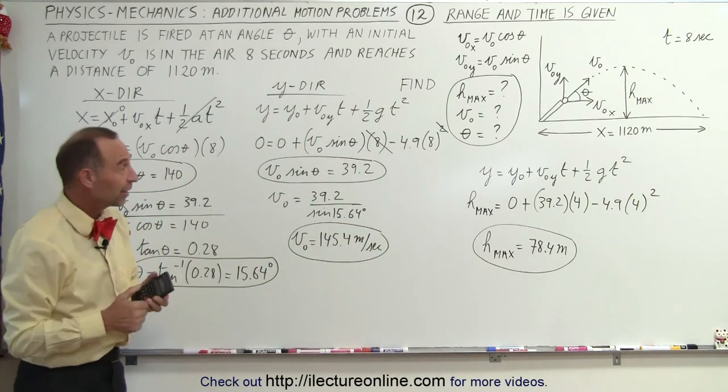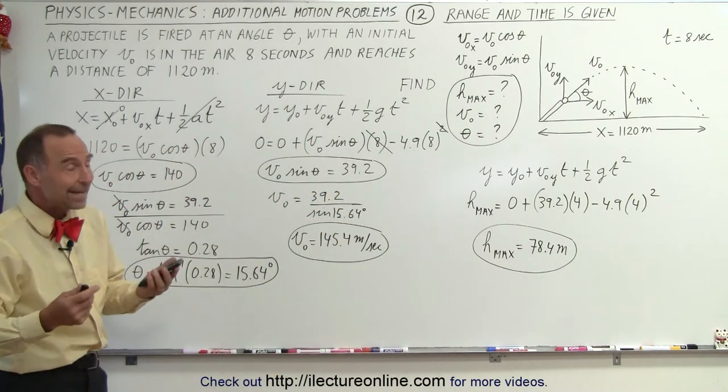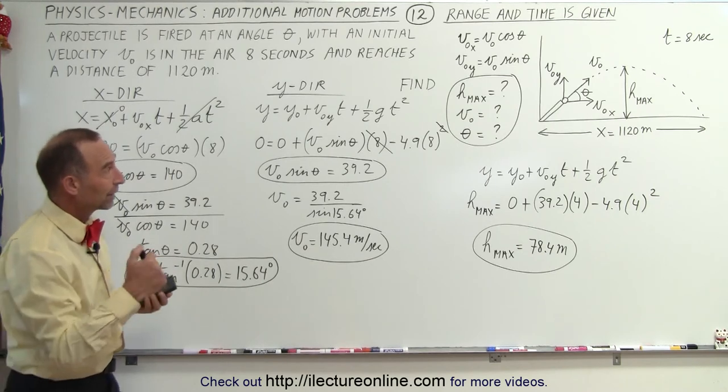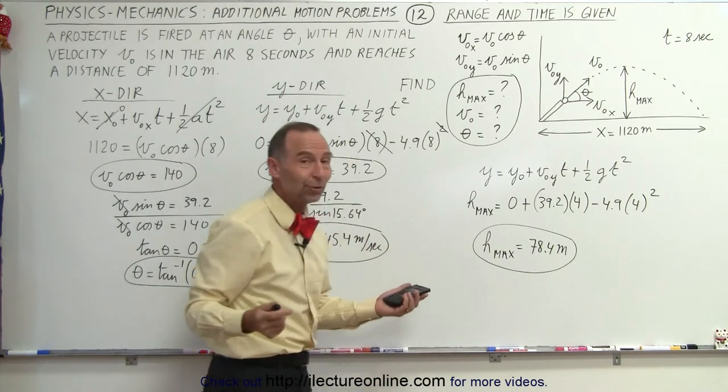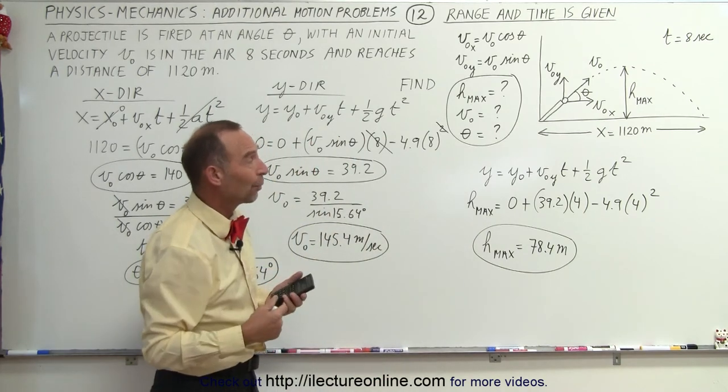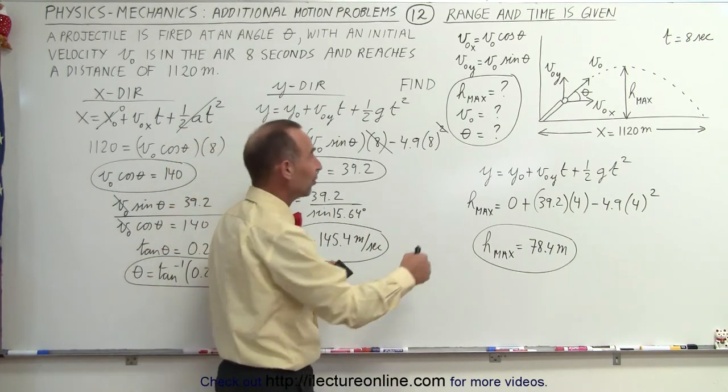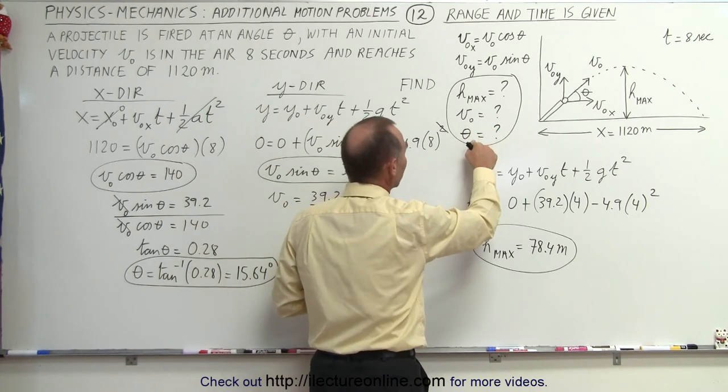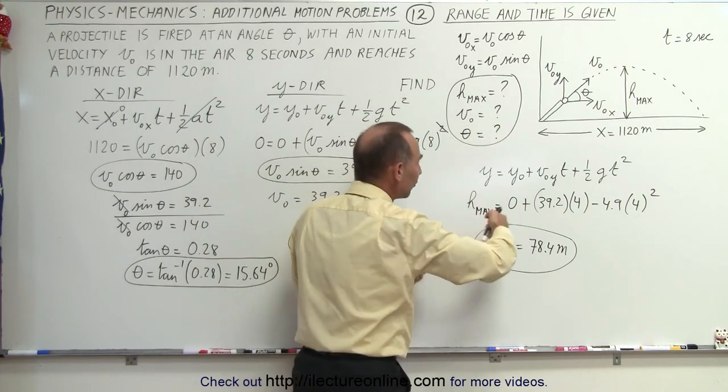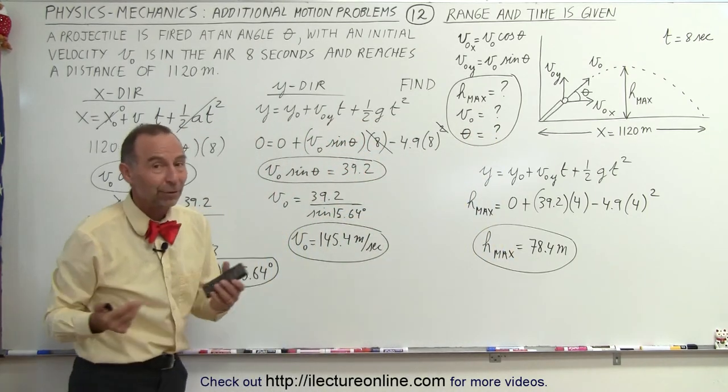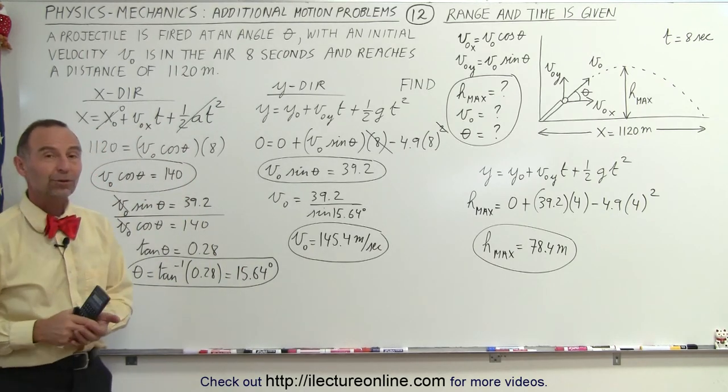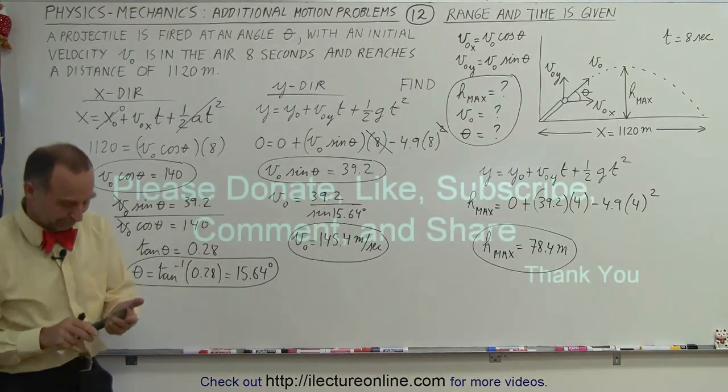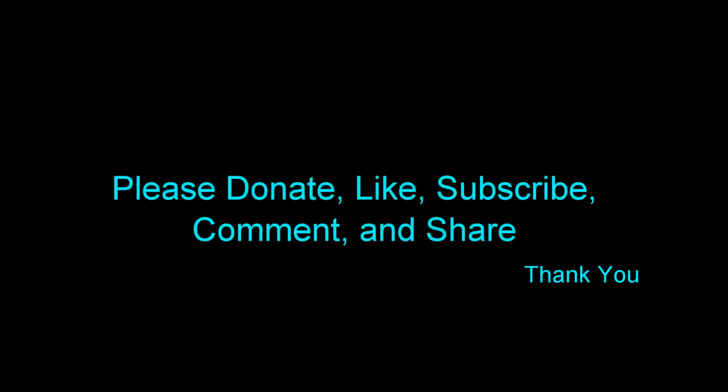And that is how to do a projectile motion like that. This is kind of unique. Notice that we were given the maximum range and the time in the air. Usually, those are the things that they're asking for. And the things that they normally give us, such as initial velocity and the angle at which it's fired, was not known. So we have to kind of do this problem in reverse. So this is a really good example. This is how we'll approach it.